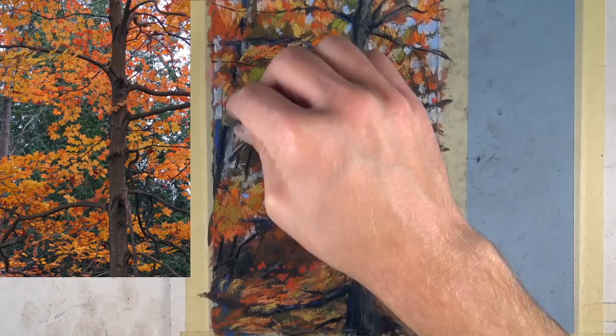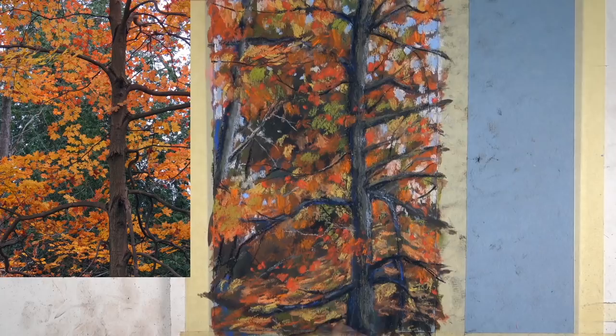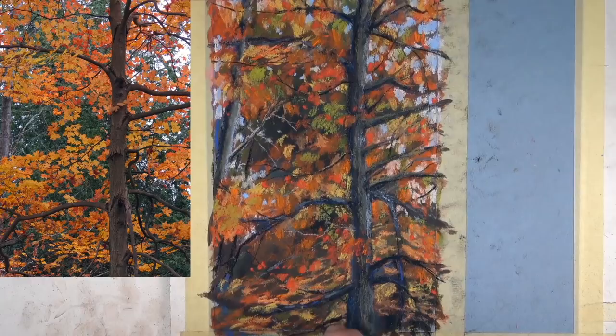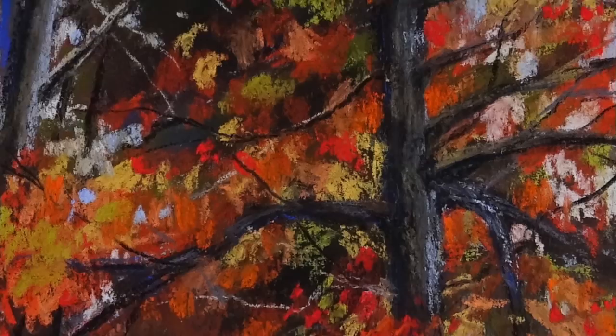Then using a burnt umber, we'll go back in and develop some of the negative spaces in between some of the leaves at the bottom portion of the picture plane. And now our quick and loose pastel sketch of an autumn tree is complete.